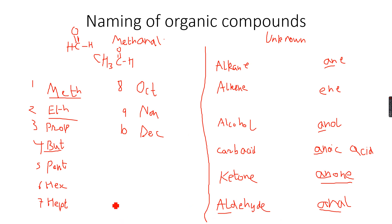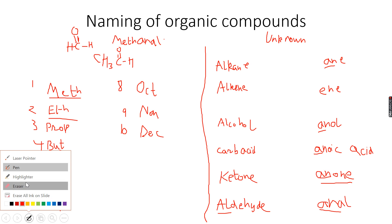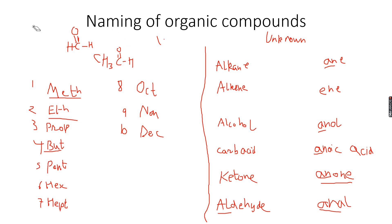So this is how we basically name organic compounds. But sometimes organic compounds don't have straight chains — they have branched chains. So how do we name these organic compounds in the case of branched chains? Let's see, keeping our functional groups with us.